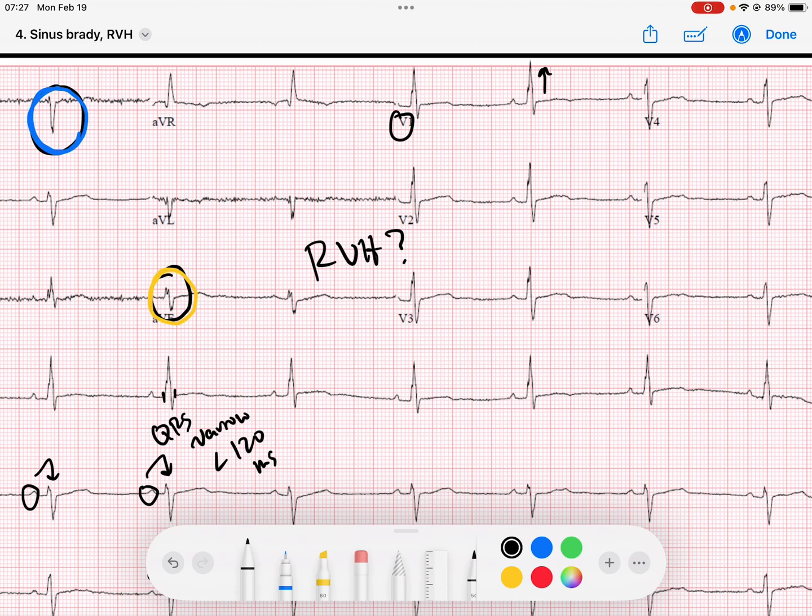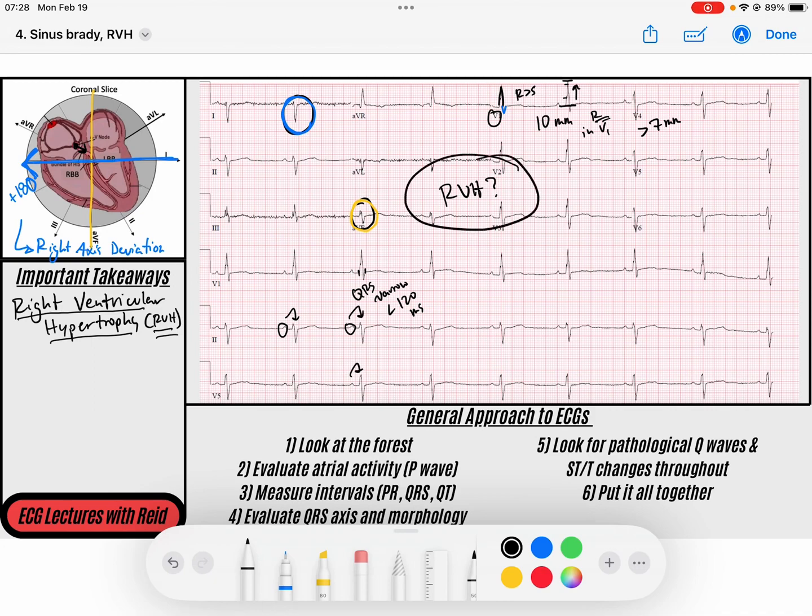I measure the R wave from the baseline to the apex, and you can see that would be well over 7 millimeters. We've got probably 10 millimeters of our R wave in V1. Our R wave is definitely larger than the S wave. The R is definitely greater than the S in V1. Because that R wave is greater than 7 millimeters in V1, that confirms our diagnosis of right ventricular hypertrophy.